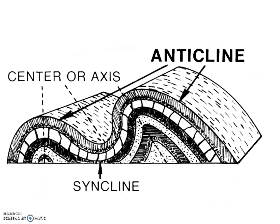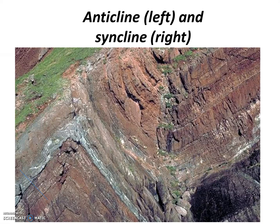The two most common types of folds are anticlines and synclines. Anticlines, as you can see on the right, are examples of upturned folds. Synclines, in the center, are examples of downturned folds. It's often the case that we see anticlines and synclines in pairs, as we see in this road cut image. The anticline is located on the left and the syncline is located on the right.